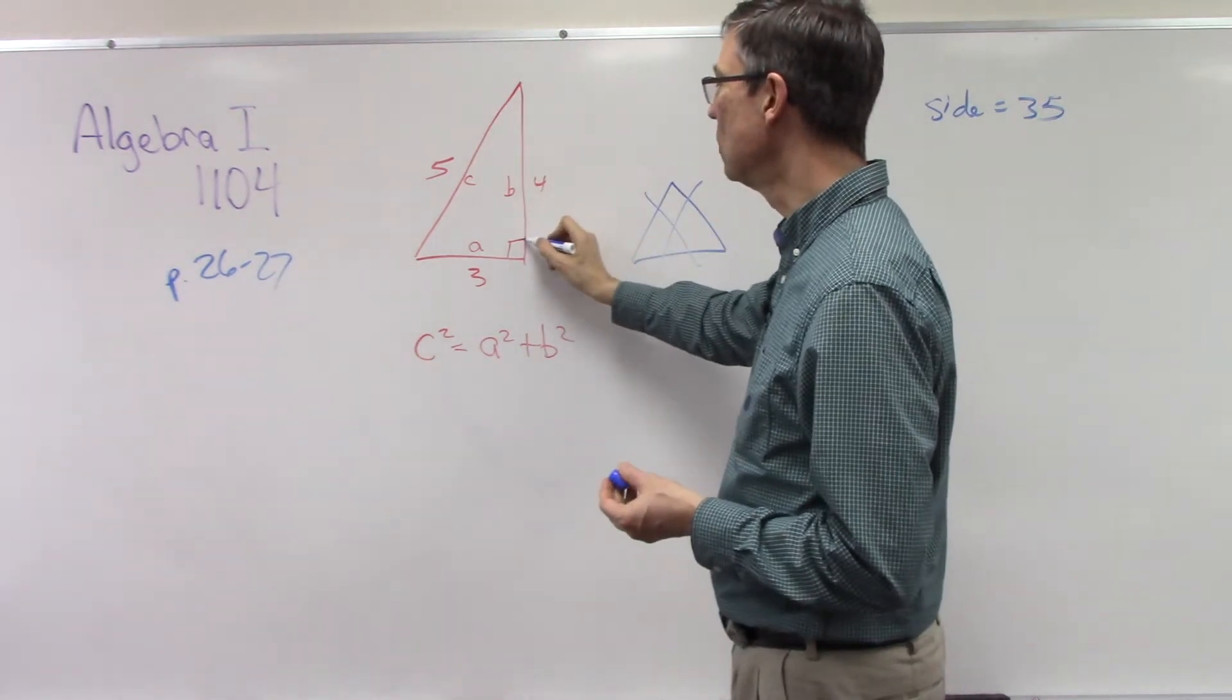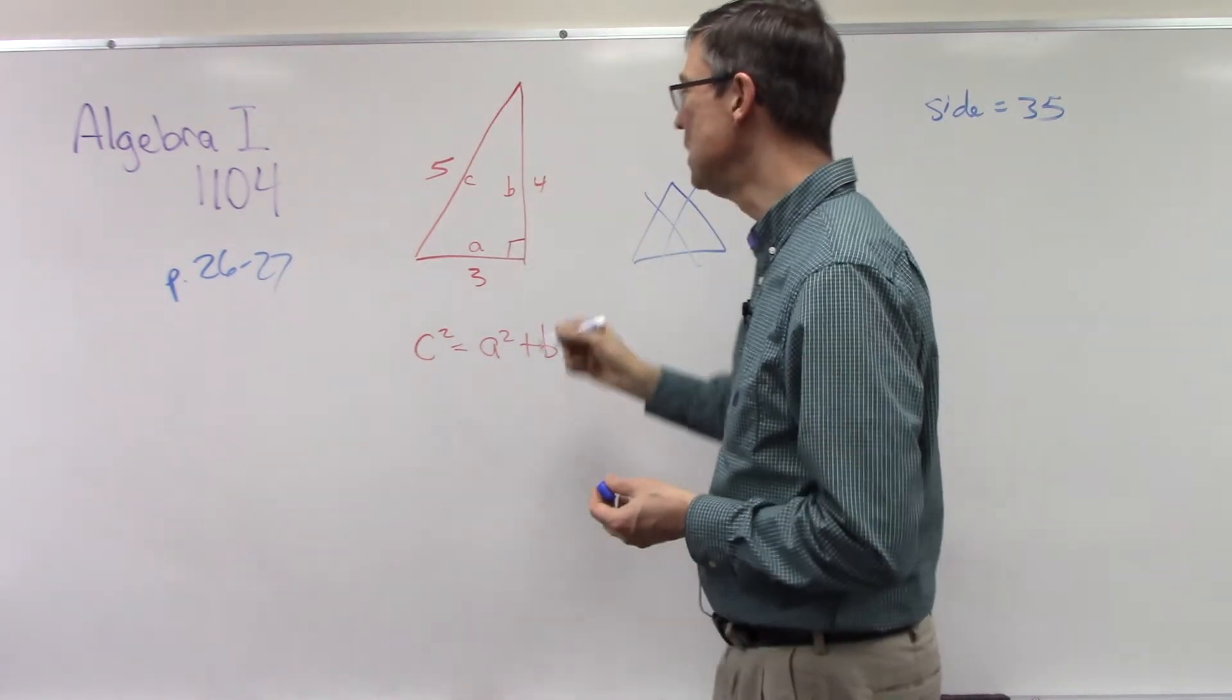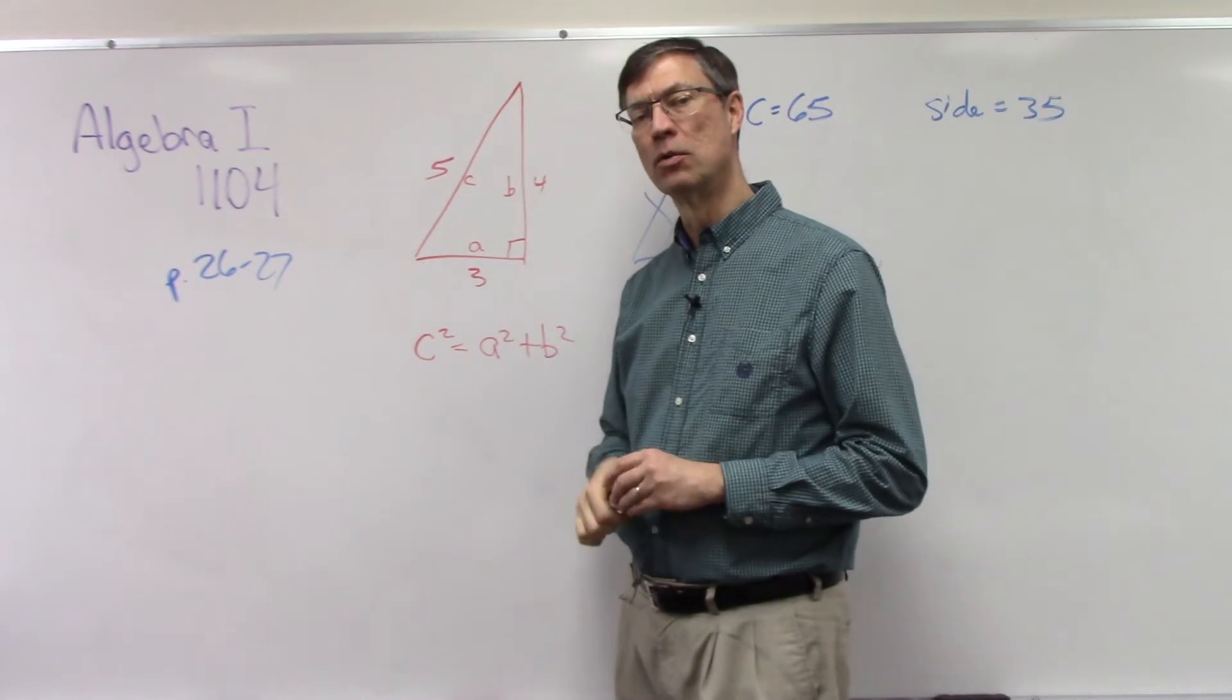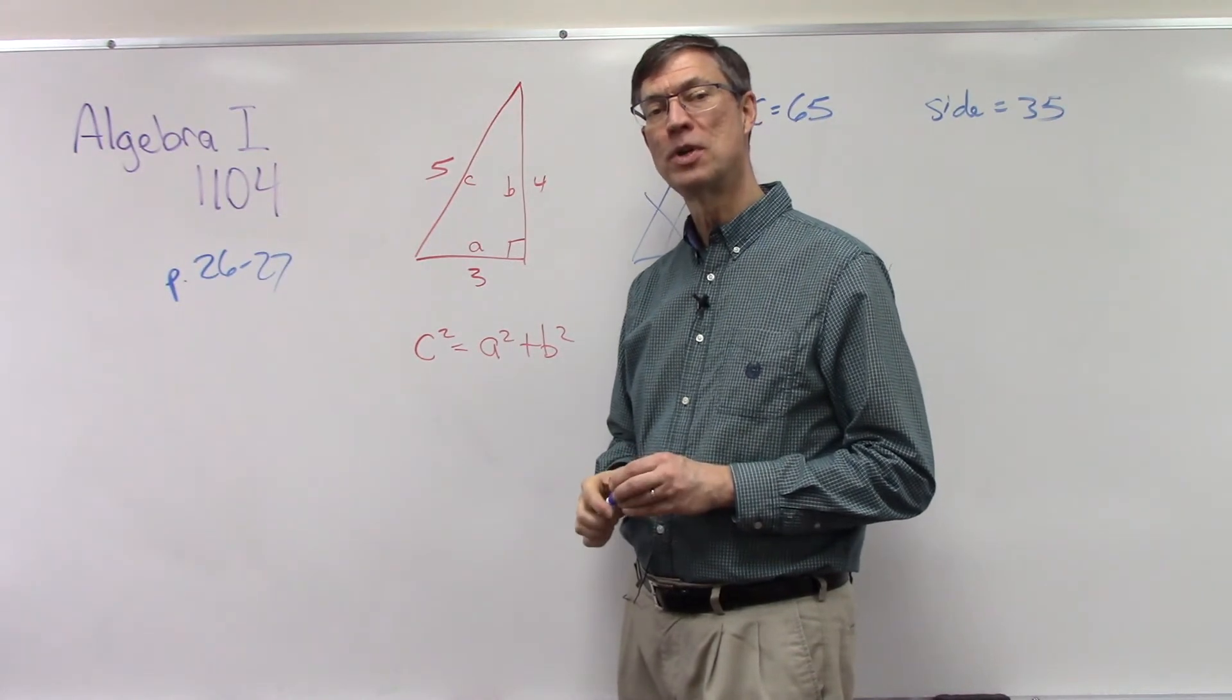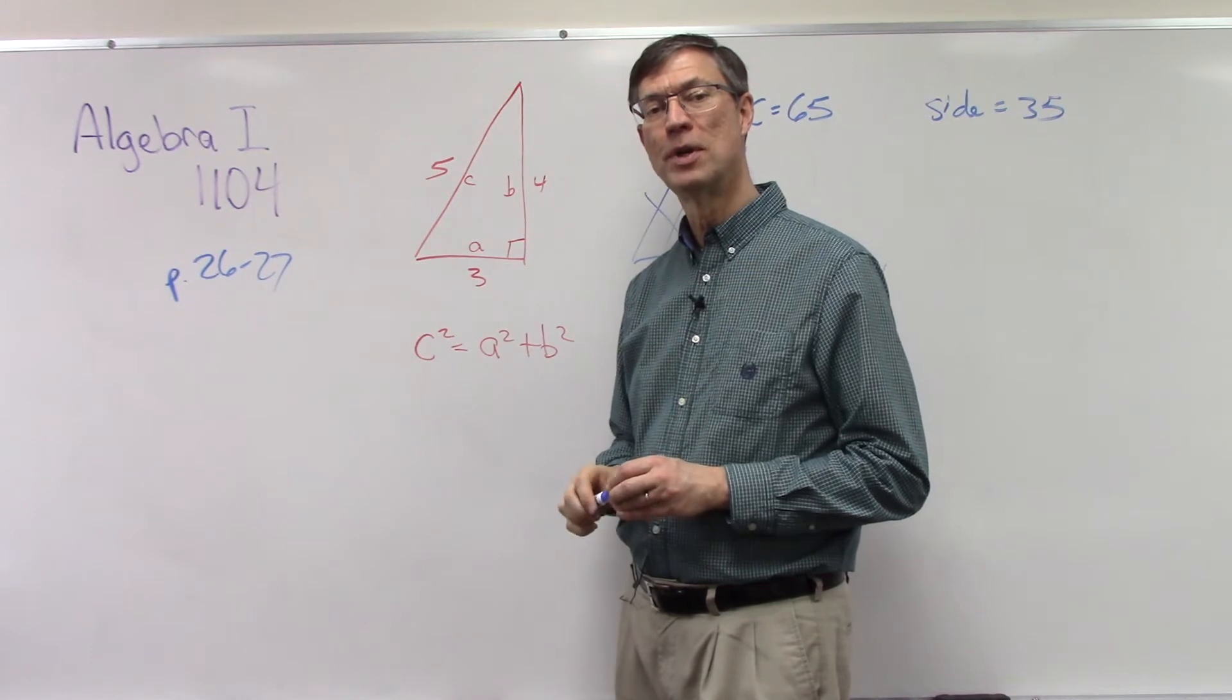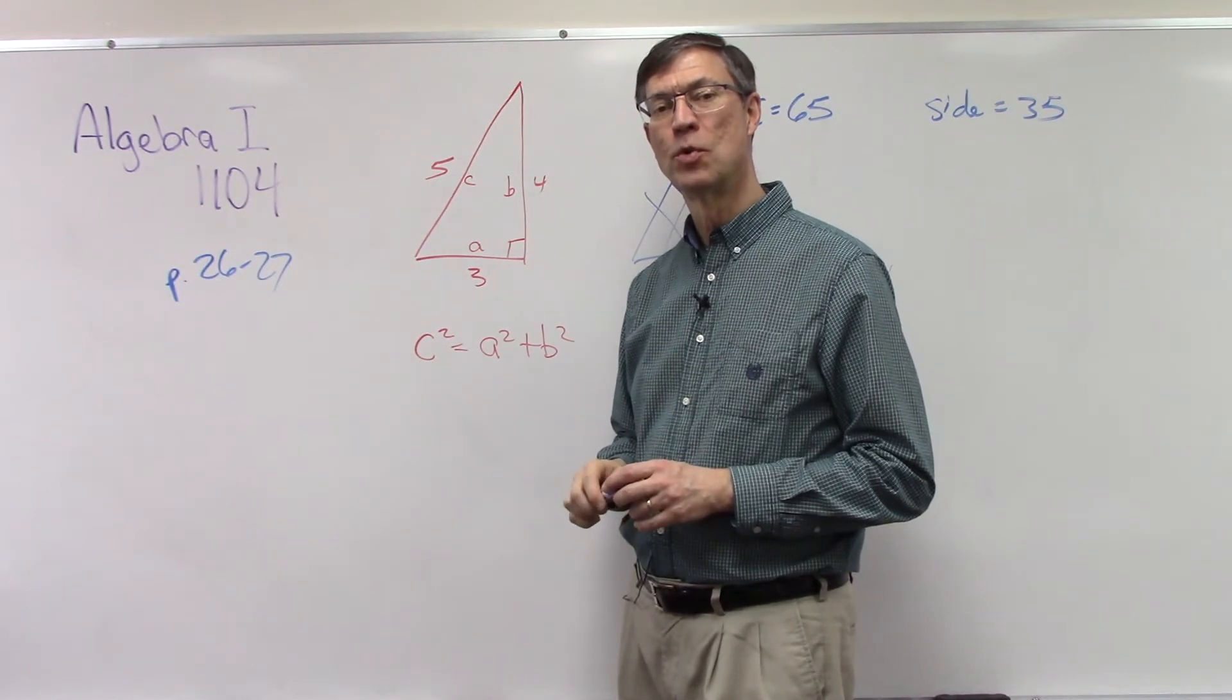But if it's a right triangle and this little square in the corner means that it is a right angle, and you'll do a lot more with that next year when you do geometry and we have a lot of videos that will help you make it through the geometry course next year.